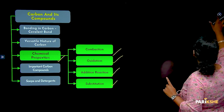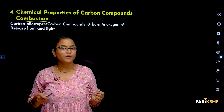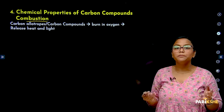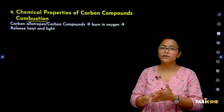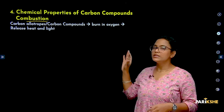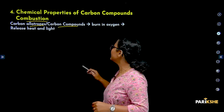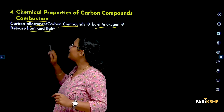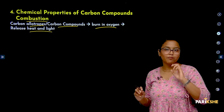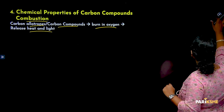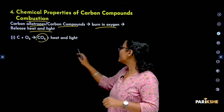We will start with combustion. Combustion is basically burning of compounds — when compounds burn in the presence of oxygen. Carbon compounds burn in the presence of oxygen to produce heat and light energy. For example, carbon reacts with oxygen to give carbon dioxide, heat, and light.